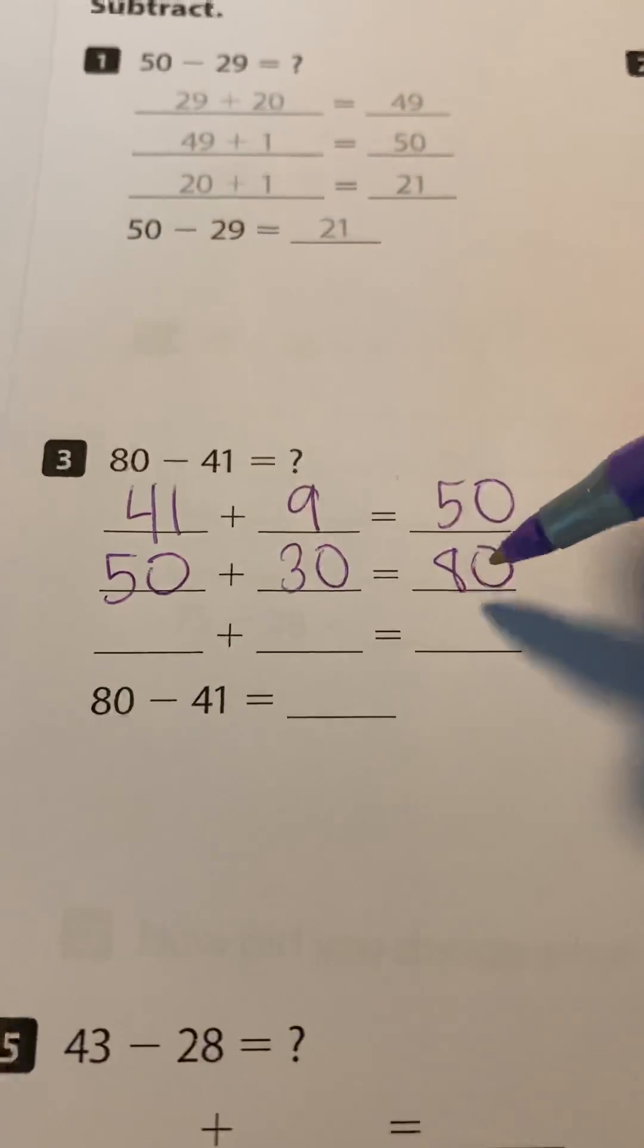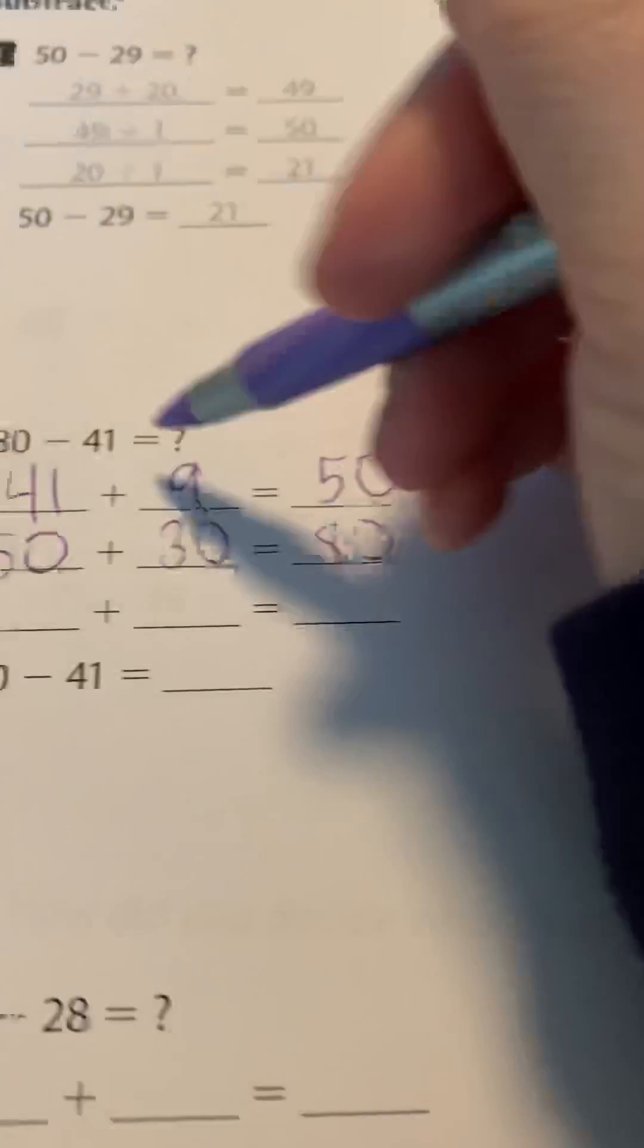Now I have 50 and I kind of want to add 30 to get to 80. Now since I'm already at 80, so remember, I start at 41, I'm at 80. The only two numbers I added were nine and 30.